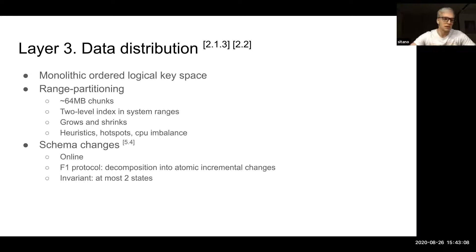It provides monolithic order-preserving logical key space, and those buckets are called ranges. CockroachDB operates data ranges. Those ranges partition data into chunks of 64 megabytes, and those chunks grow and then shrink. They are balanced based on heuristics, hotspots in CPU and imbalance. They also support online schema changes.